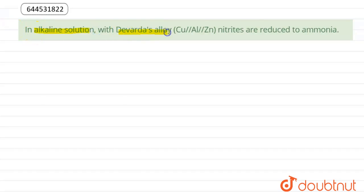alkaline solution with Devarda's alloy, nitrites are reduced to ammonia. This statement is true or false? Devarda's is an alloy of